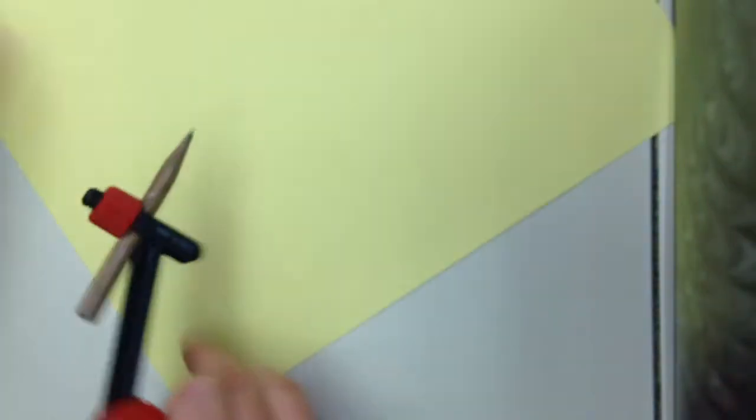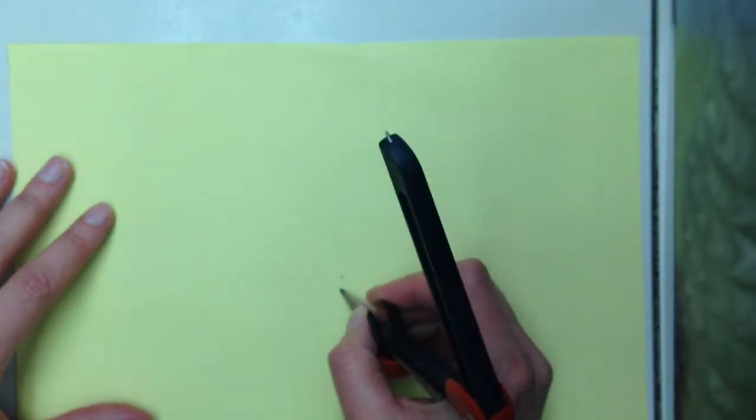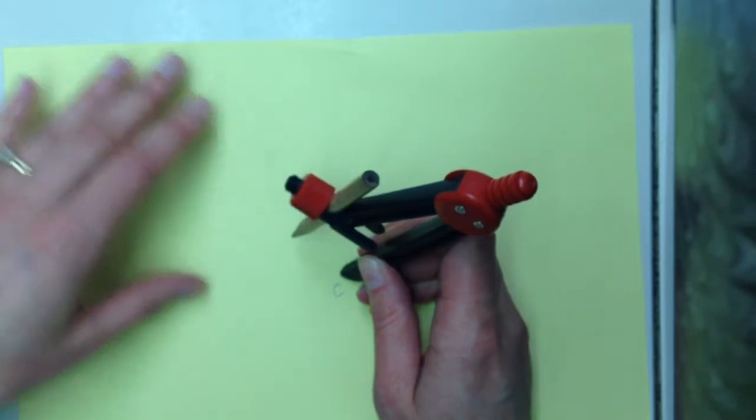So the first thing you're going to start with is a point that's going to be the center of your circle. And now construct a circle using that point.